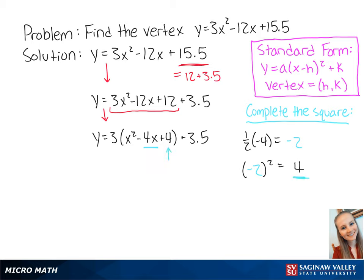Since we already have a 4, we can complete the square, which gives us y equals 3 times x minus 2 squared plus 3.5. Now that we have our h and our k,